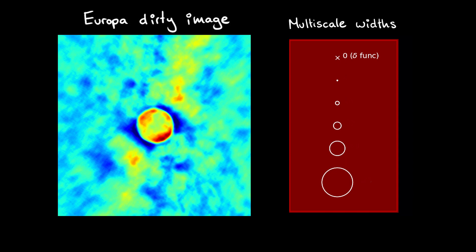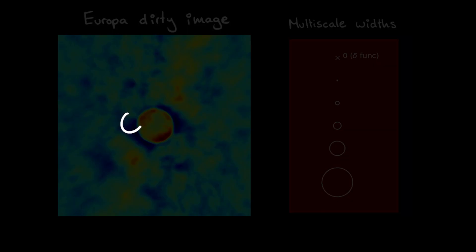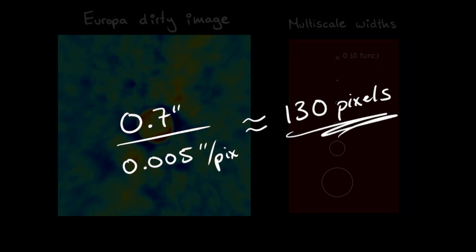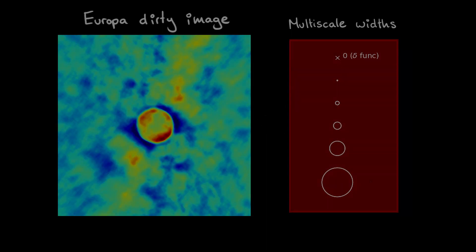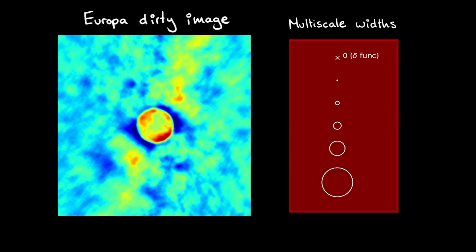A delta function just has a width of 0 pixels. For Europa, for which 0.7 arcseconds is about 130 pixels across in our image, we chose six size scales for our multi-scale clean, using 0, 4, 16, 32, 64, and 128 pixels.